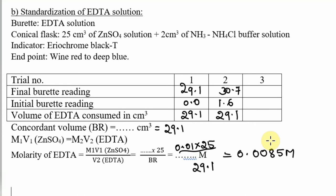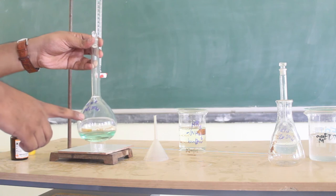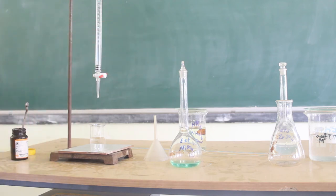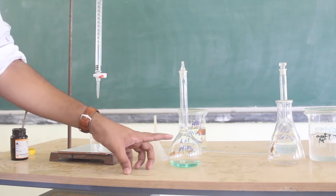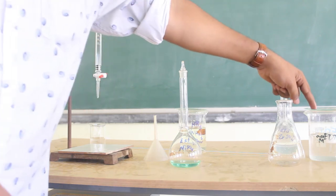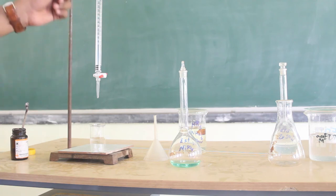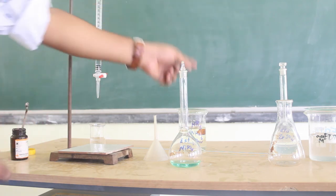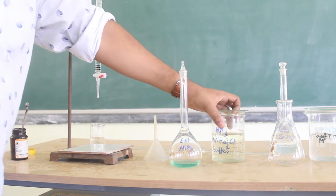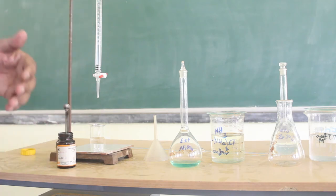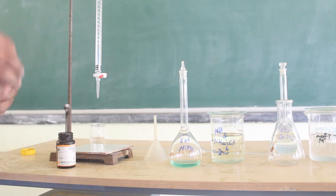Next, Part 2: estimation of nickel through back titration. Make up the nickel stock solution to 250 ml, then pipette out 25 ml into a conical flask. To this conical flask, add approximately 30 to 35 ml of EDTA solution taken from the burette — I am going to add 35 ml. Next, add approximately 3 ml of ammonia ammonium chloride buffer. Then add eriochrome black T indicator. Because we are adding EDTA in the initial step itself, we are not titrating the nickel solution against EDTA; you will obtain the initial color as deep blue.